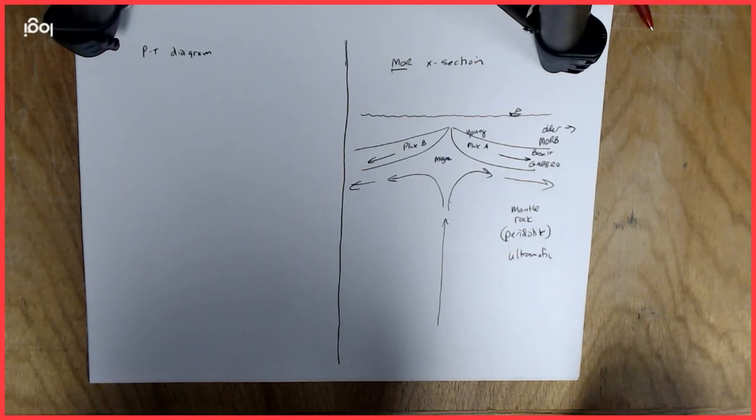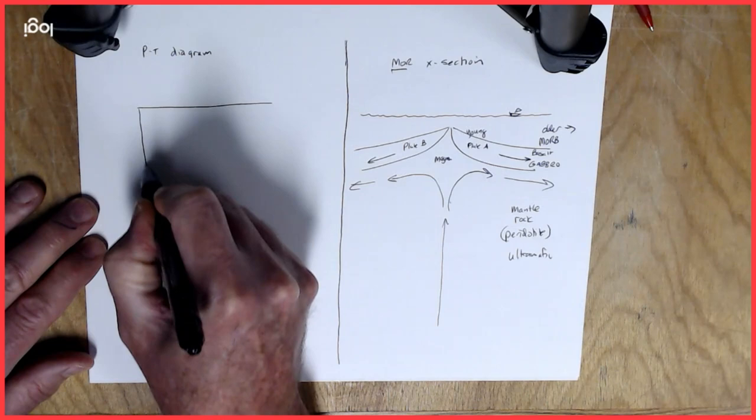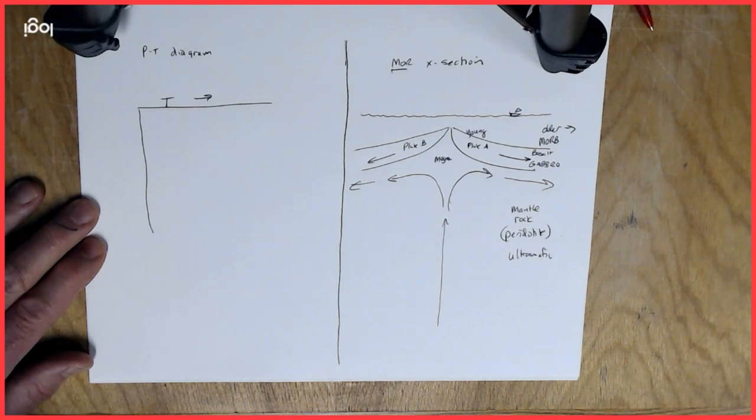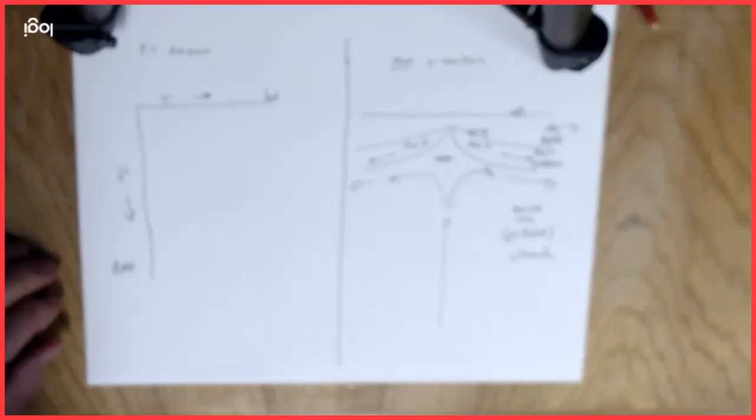So somewhere in this process we've got to get magma, and we understand this once we do the laboratory experiments to understand how ultramafic rocks melt. And for that we need to sketch the pressure and temperature phase diagram.